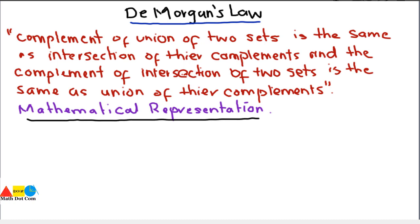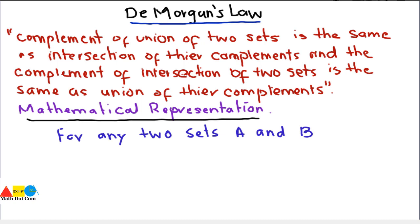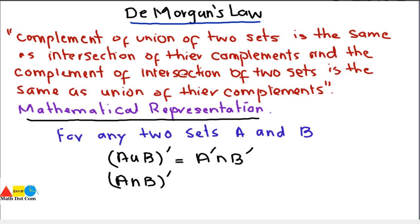In set theory, for any two finite sets A and B, De Morgan's Law in mathematical form can be written as: (A ∪ B)' = A' ∩ B', and (A ∩ B)' = A' ∪ B'. This is the mathematical representation of De Morgan's Law.